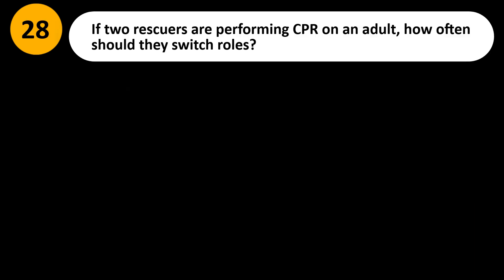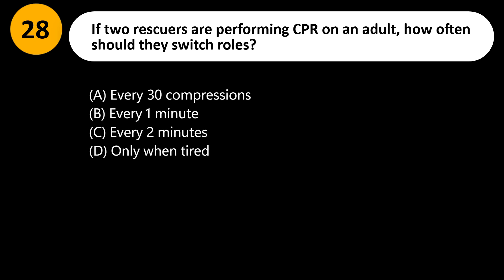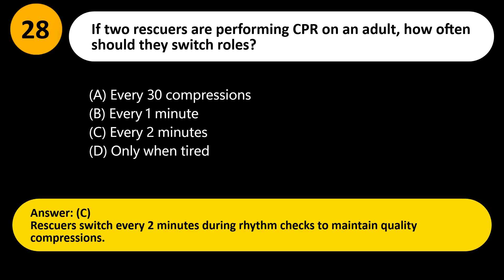If two rescuers are performing CPR on an adult, how often should they switch roles? A) Every 30 compressions, B) Every 1 minute, C) Every 2 minutes, D) Only when tired. Answer: C. Rescuers switch every 2 minutes during rhythm checks to maintain quality compressions.